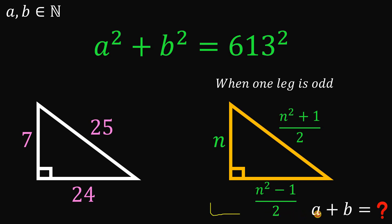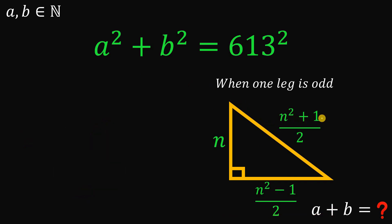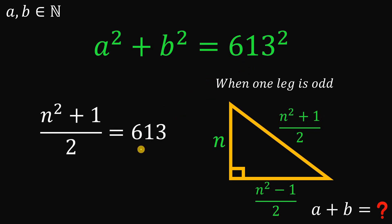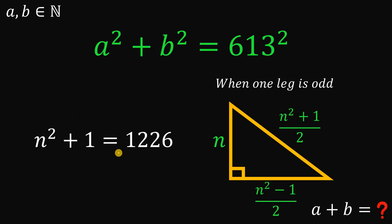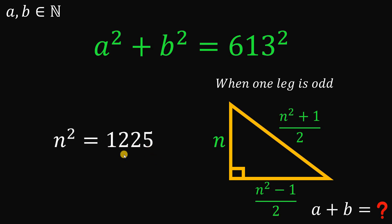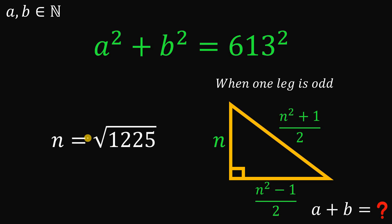Using this pattern, we can now solve for a and b. We let (n squared plus 1) over 2 equal the hypotenuse, which is 613. Multiplying both sides by 2 gives n squared plus 1 equals 1226. Subtracting 1 from both sides gives 1225. Taking the square root of both sides, n equals the square root of 1225, which is 35.